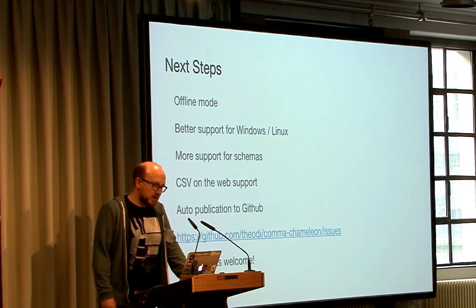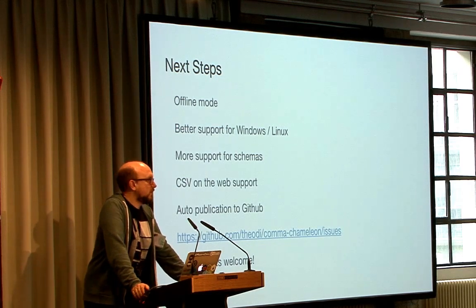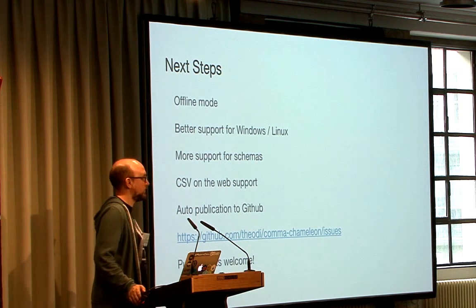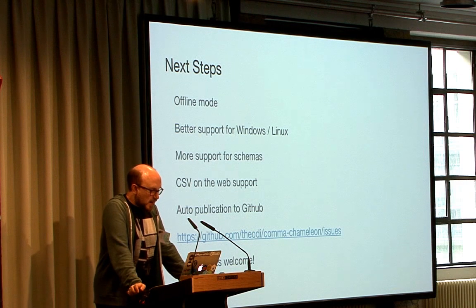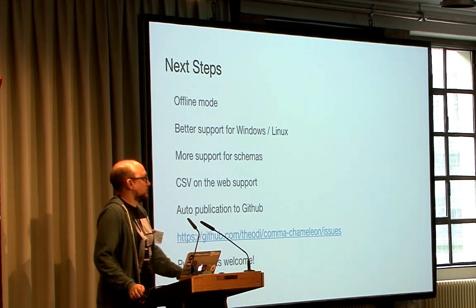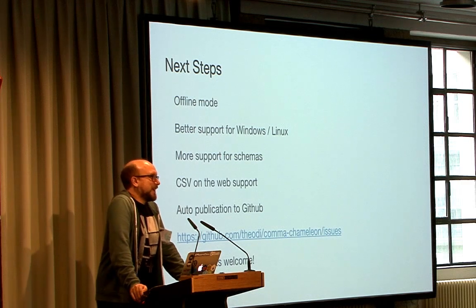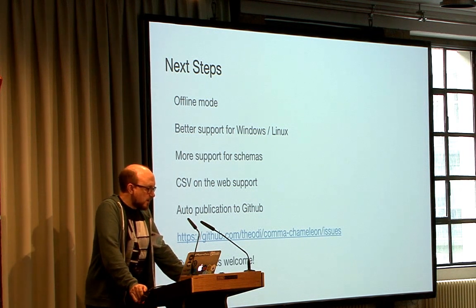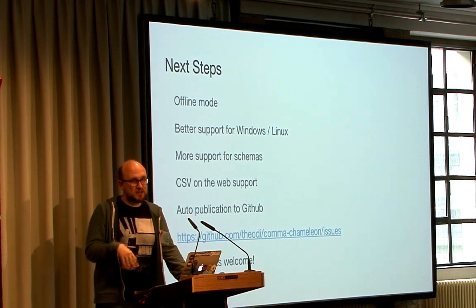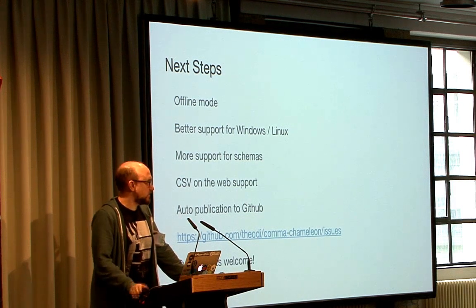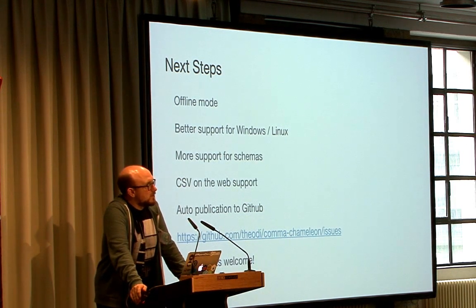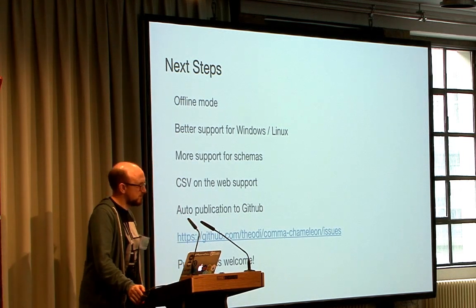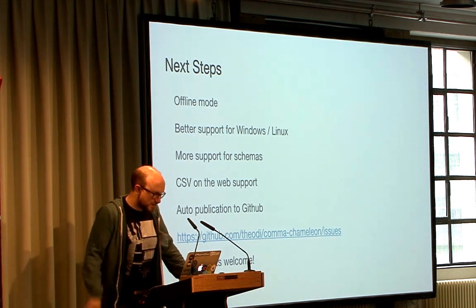There's always room for improvement. I want to add an offline mode, because at the moment it calls the CSV Lint API, which isn't ideal — if you're offline you can't validate, which sucks. Better support for Windows and Linux; I'm limited by the OS on my laptop so I don't get to do much testing on Windows. More support for schemas, CSV on the web support, auto-publication to GitHub, and Dat support as well — I keep getting ideas, which is probably dangerous.